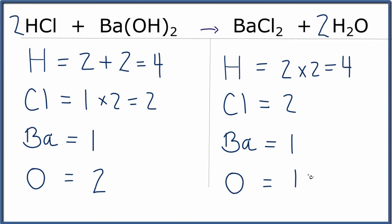We have one times the two. And that ends up balancing the entire equation. We have four hydrogens on each side, two chlorines, one barium, and two oxygens.